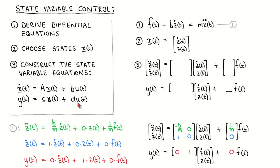The state variable approach describes the dynamics of the system as a set of first-order differential equations. Looking at the example again: the first step is to set up the differential equation, which we derived previously — we call this equation 1. The second step is to choose the states. For this example, we choose the velocity z-dot as the first state and the displacement z as the second state.